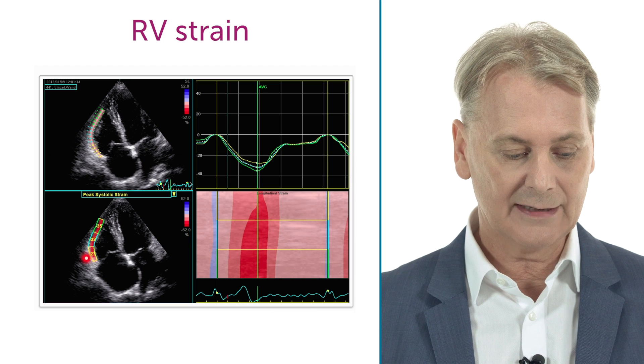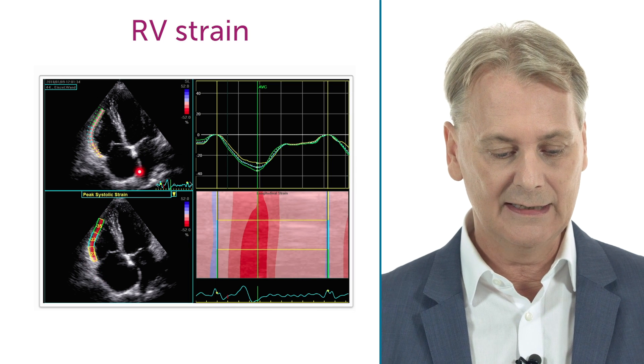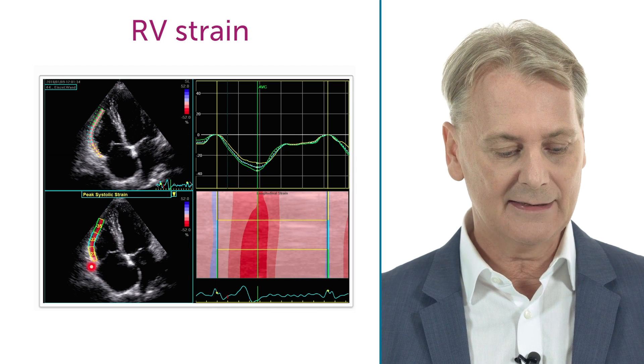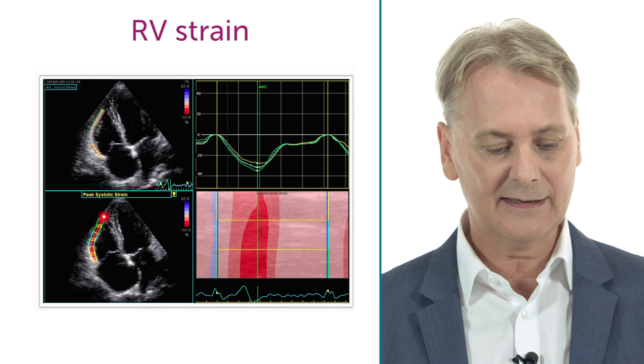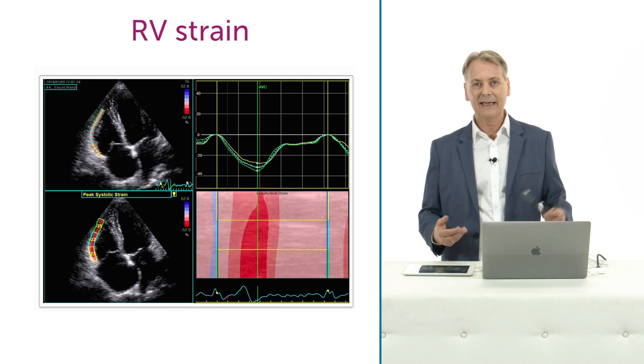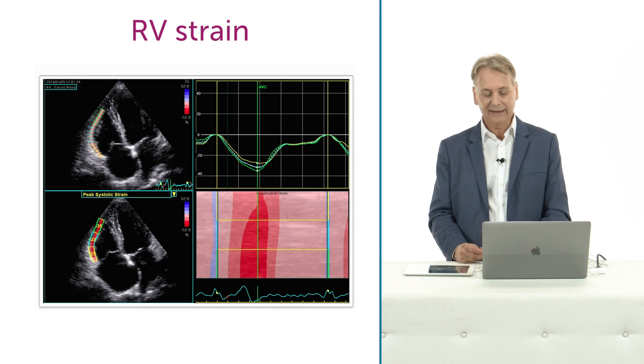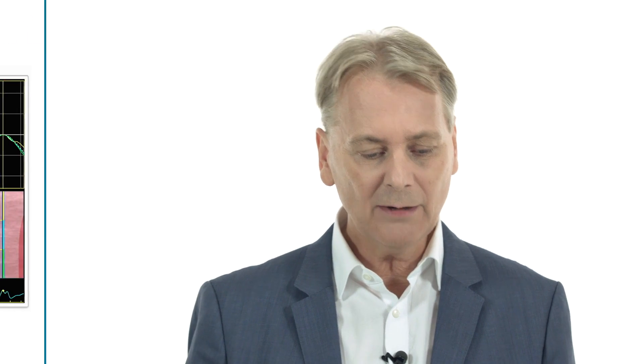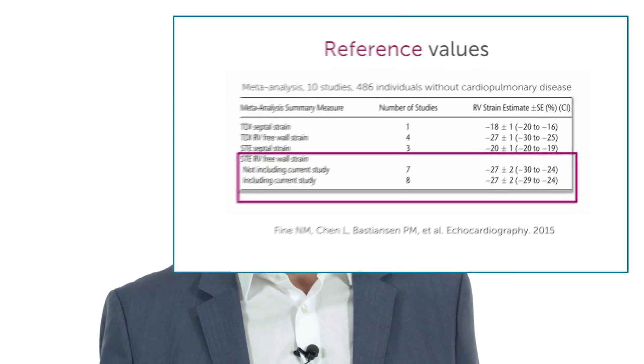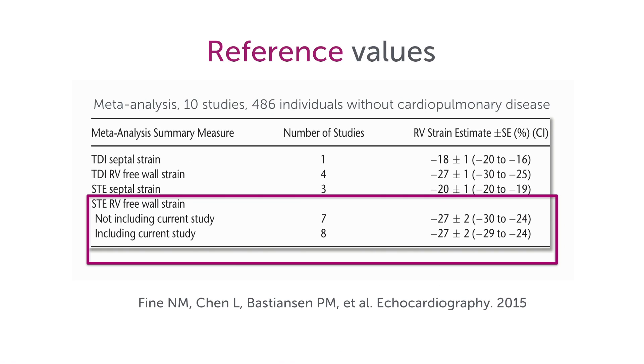This methodology allows you to do a lot of calculations. Not only can we look at the entire myocardium, but also at the individual segments — the base, the mid, and the apex. We have different ways of displaying these curves and the data. The bottom line is that we now know there is a normal value somewhere in the range of minus 27 to 28.